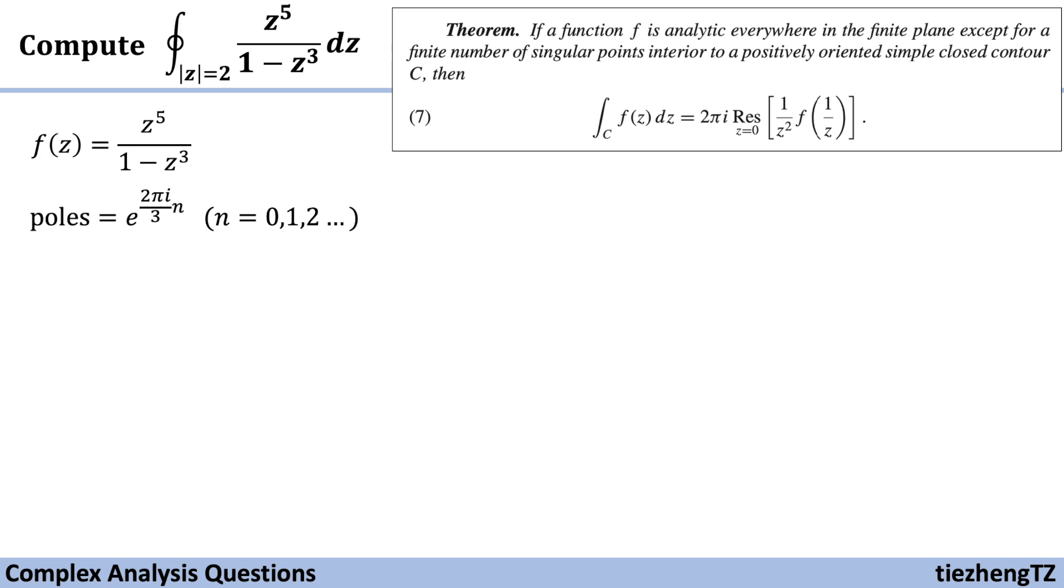We know it is analytic except for a finite number of singular points, which are e^(2πi/3)n where n can be 0, 1, 2, 3, 4. However, we know there are some singular points within or interior to this simple closed contour, which is a circle with radius 2.